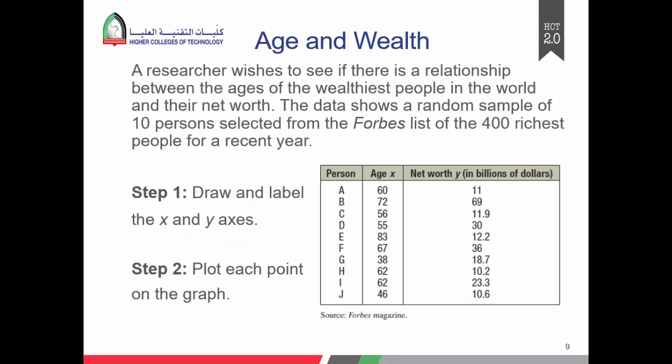In this example, a researcher wishes to see if there's a relationship between ages of the wealthiest people in the world and their net worth. It's already given to us that this is the x and this is the y. We don't have to think about it anymore.